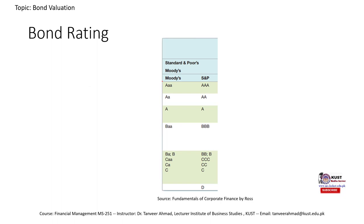Moody's and Standard & Poor's are called credit rating agencies. They rate bonds of corporations on the basis of their credit worthiness. The highest rating is triple-A and the lowest rating is D in the case of Standard & Poor's and C in the case of Moody's. A highest rating means that the chances of default on interest payment or principal amount are low, while a D or C rating means chances of default are high.